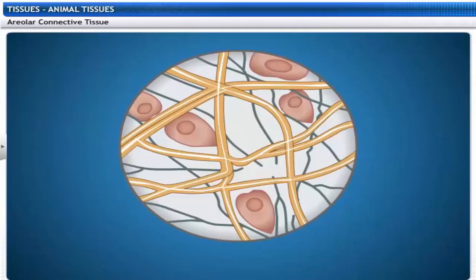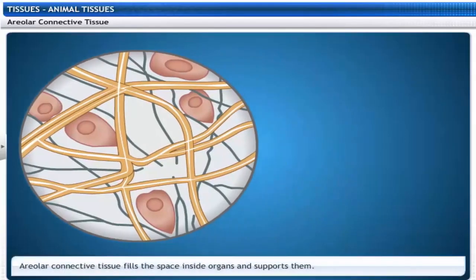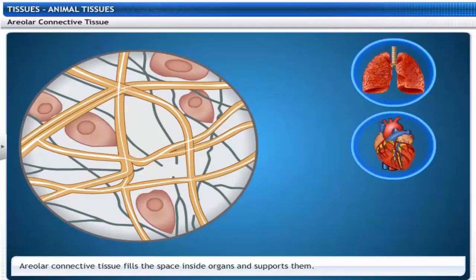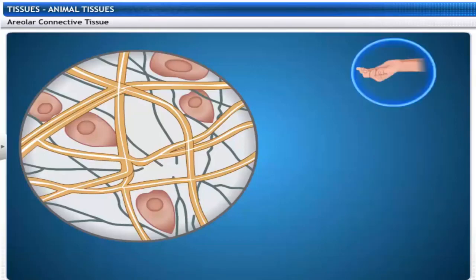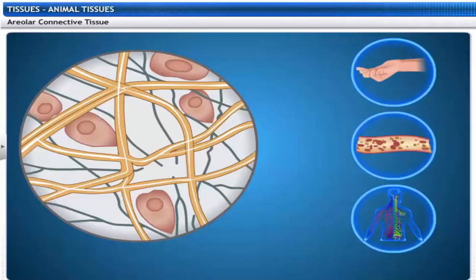Take a look at these irregular shaped cells. These are areolar connective tissue that fills the space inside organs and supports them. Such tissues are found between the skin and muscles and around blood vessels and nerves.